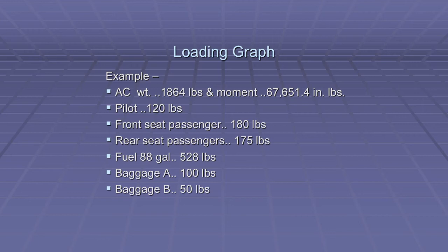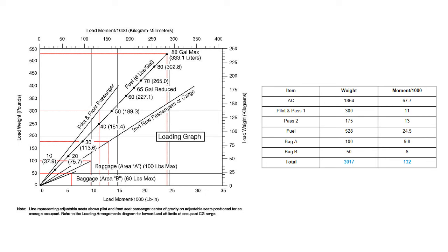You might have already noticed that none of these items contain arms or distances from the datum — we'll see why in just a moment. We will go to our loading graph to get the total load moment. On the left side of the graph is the loaded weight in pounds from zero to 550, and across the bottom is the load moment divided by 1,000 in inch pounds from zero to 35. Starting from the bottom left corner, we see diagonal lines: the first is the pilot and front seat passenger line, the second is the fuel diagonal, then the second row passenger or cargo diagonal, the baggage area A diagonal, and the baggage area B diagonal.